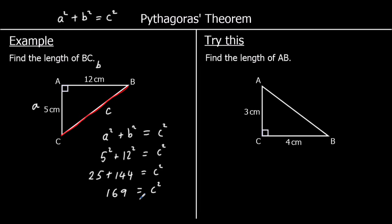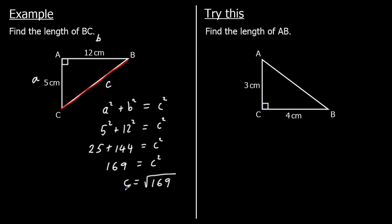To get c by itself, we do the opposite of squaring, which is square rooting. So c, if we square root both sides, will be the square root of 169, which is 13. So it's 13 centimeters. So 5 squared plus 12 squared equals 13 squared, which means that this length must be 13 centimeters.